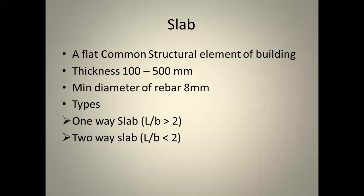Slab is a flat common structural element of a building. Since it is a structural element it is made up of RCC, that is reinforced cement concrete, with the help of steel as well as concrete. The thickness of the slab is mostly 100 to 500 mm — a normal residential building will go for a 100 mm thick slab. The minimum diameter of rebar, which is nothing but the reinforcement bar, should be minimum 8 mm for the slab.